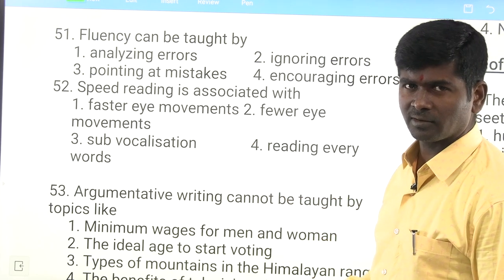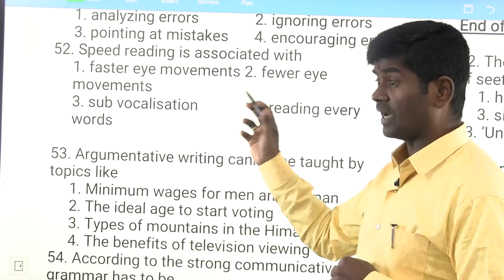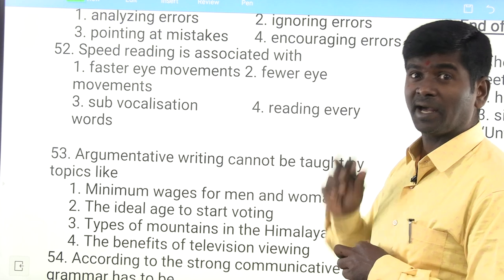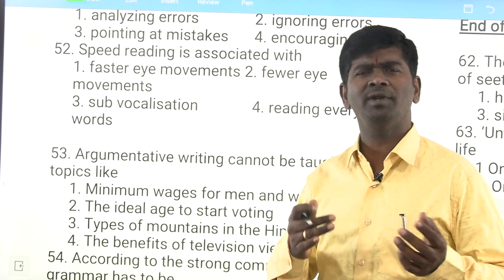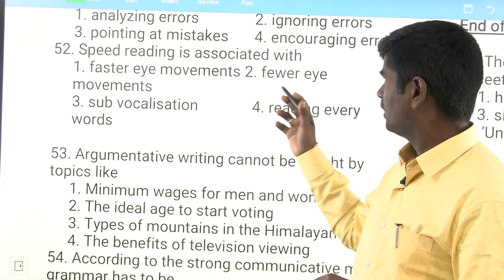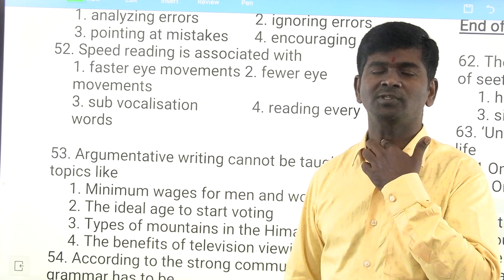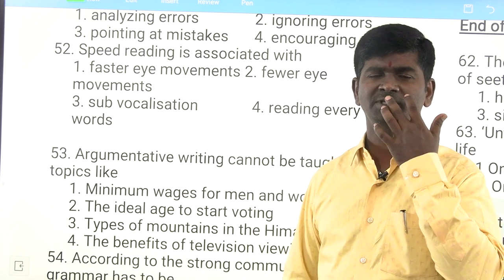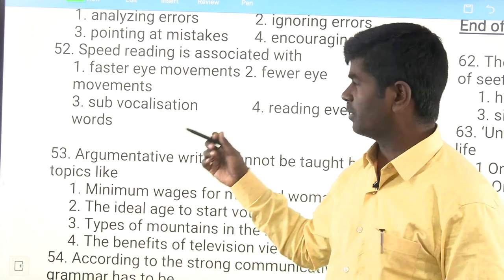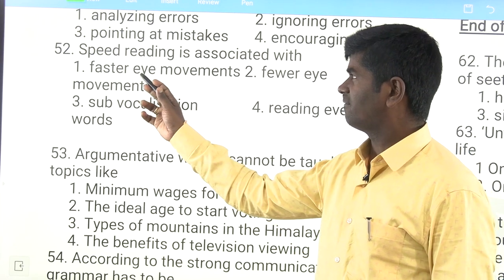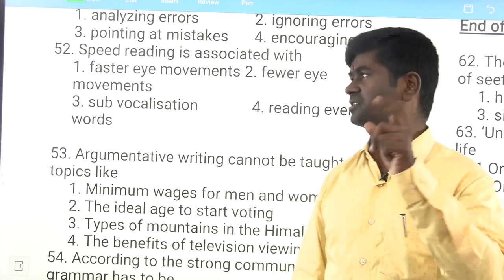Speed reading is associated with faster eye movements. This is about Unit 3 — how do you improve speed reading in learners? Options: faster eye movements, fewer eye movements, sub-vocalization, or reading every word. Reading every word gives only accuracy, not fluency. Fewer eye movements — no. Sub-vocalization means making murmuring or buzzing sounds, moving lips or vocal cords while reading — a very technical word for a bad reading habit. The correct answer is faster eye movements — learners should only move their eyes when they read.